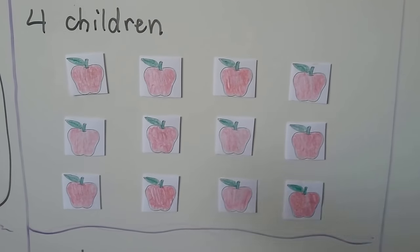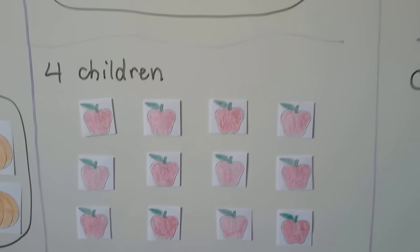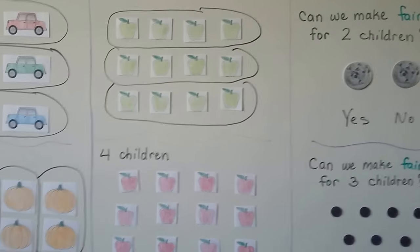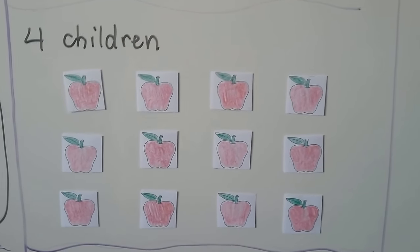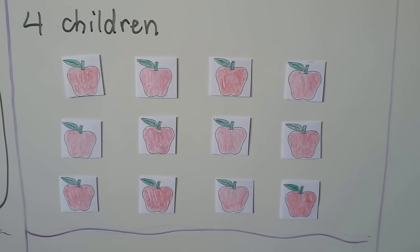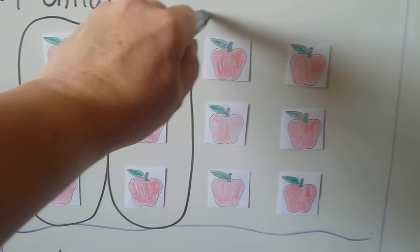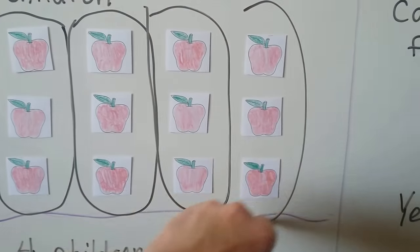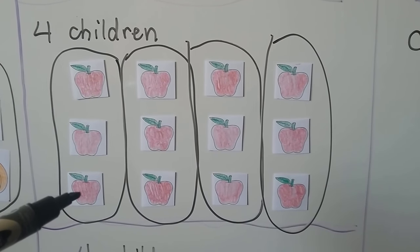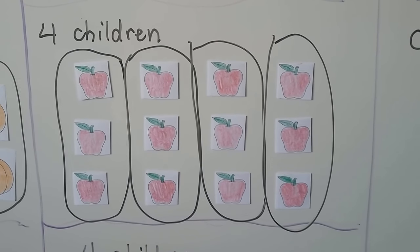Now we have four children and we have twelve apples — the same number as before. But instead of three children, now we have four children. We can make four groups for the four children. Each of the children will get three apples — there are three apples in each group and four groups. Each child will get one of the four groups — they'll get one-fourth of the apples.